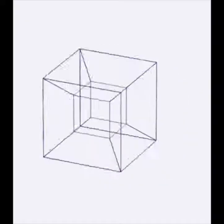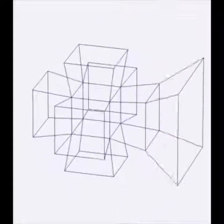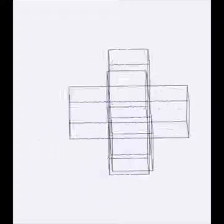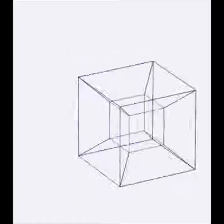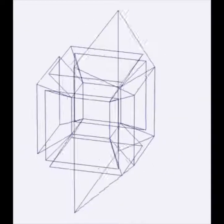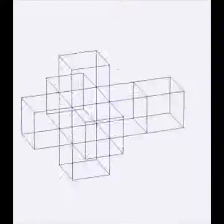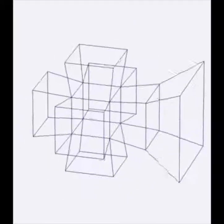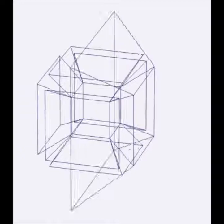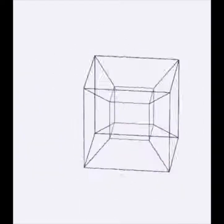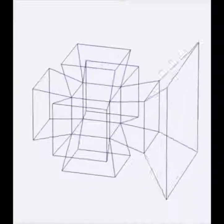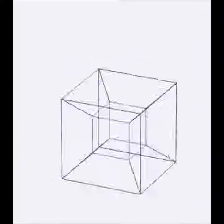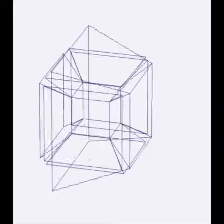A more useful way to think of a tesseract is as a folding in the fourth dimension of a 3D net of 8 cubes, just as a cube is a folding in the third dimension of a 2D net of 6 squares. Start with a stack of 4 cubes, with 4 more cubes arranged in a cross around the second cube from the top. A tesseract is made by folding in the fourth dimension, so that the top face of the cube at the top of the stack merges with the bottom face of the bottom cube, and so that the adjacent edges of the cubes in the cross join.